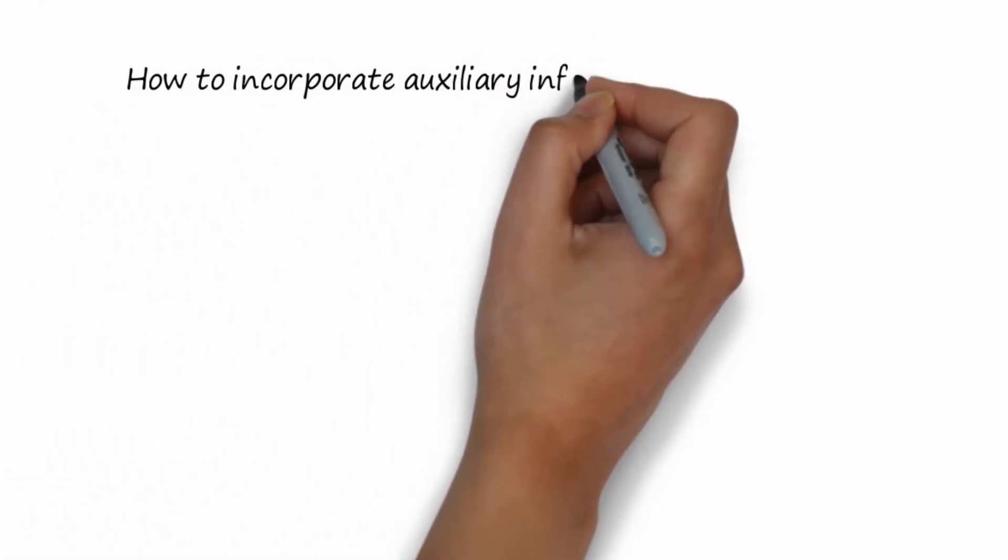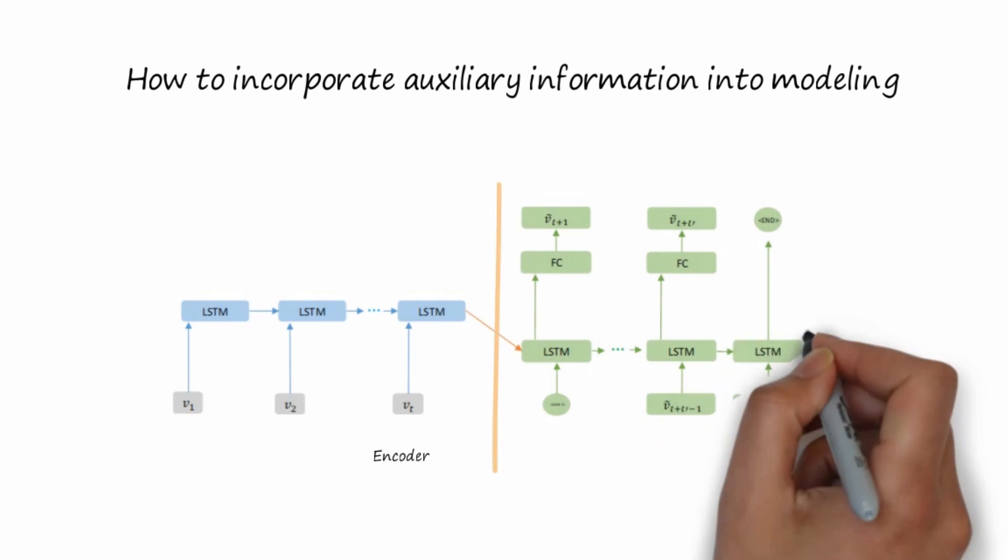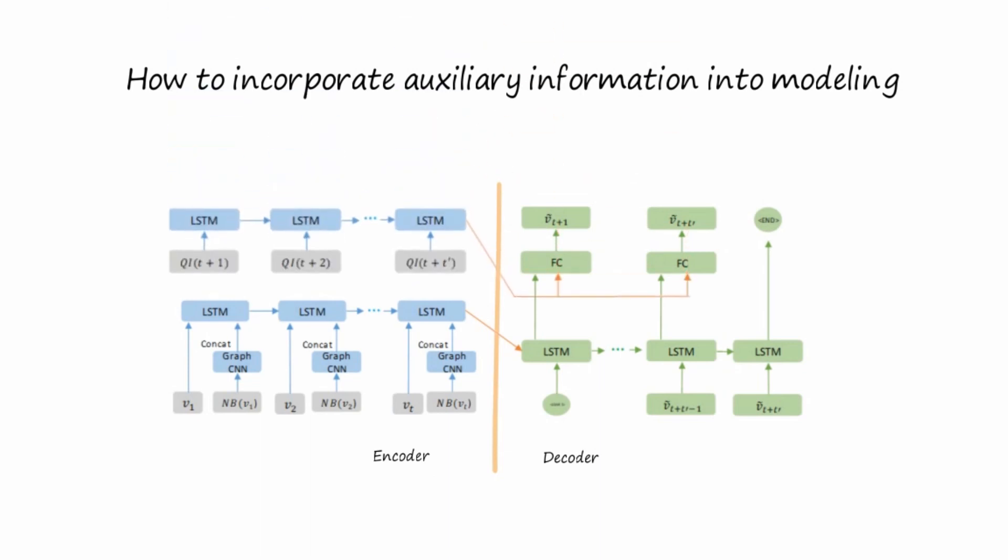So how to incorporate auxiliary information into modeling for traffic prediction? We use a hybrid sequence learning method within an encoder-decoder framework. Firstly, we use a graph CNN to encode the road network information. Then we consider the potential traffic and map queries. At last, the geographical and social information are incorporated by a wide and deep network.